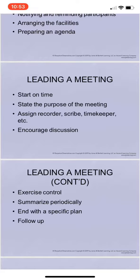Number three, make some assignments. For a meeting of reasonable size — five, six, or more people — common assignments include a recorder, a scribe, and a timekeeper. A recorder keeps track of what happens and generates the written minutes. The scribe captures points or ideas on a chalkboard or flip chart as they evolve during the meeting. In a small meeting the recorder and scribe might be the same person, but the roles are really different. The timekeeper keeps track of time spent on each agenda item and keeps the group aware of where they stand relative to total allotted time and the agenda.